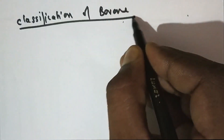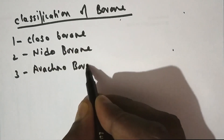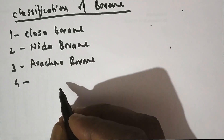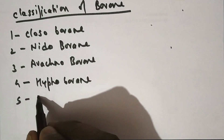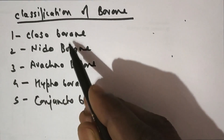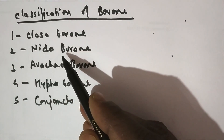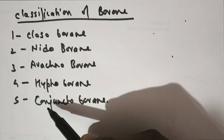Now we will go for the classification of boranes. The following categories generally exist: first is closo-borane, second is nido-borane, third is arachno-borane, fourth is hypho-borane, and fifth is conjuncto-borane. So we can classify boranes into these five categories.